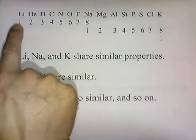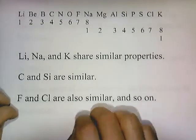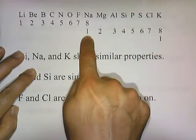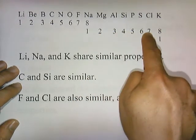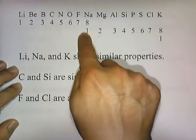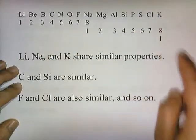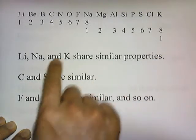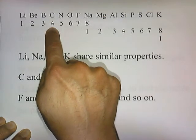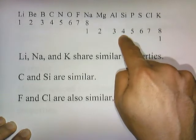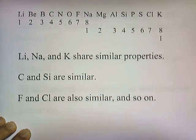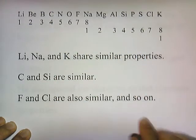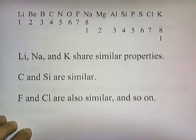With elements listed from lightest to heaviest, every eighth element had similar properties to the first. So counting 1 through 8, the eighth element had similar properties to lithium. Starting the count again, potassium had properties similar to sodium, which had properties similar to lithium. Carbon and silicon are also similar — carbon is the fourth element in the first group and silicon is the fourth in the second group. Fluorine and chlorine are similar in the same way, as are boron and aluminum, beryllium and magnesium, and so on.